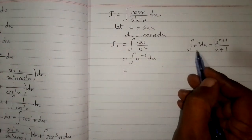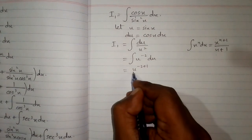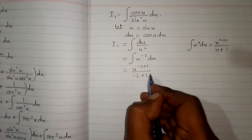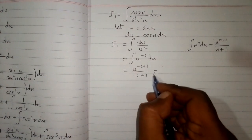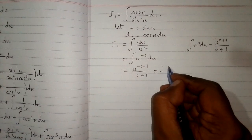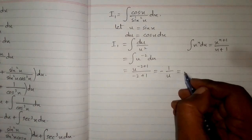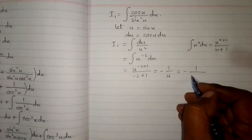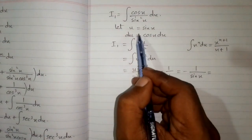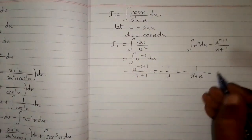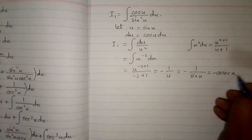We apply the power rule of integration, giving u raised to the power minus 2 plus 1 upon minus 2 plus 1, which gives minus 1 upon u. This can be written as minus 1 upon sin x. So the integral of cos x upon sine squared x is minus 1 upon sin x.